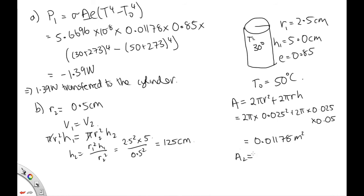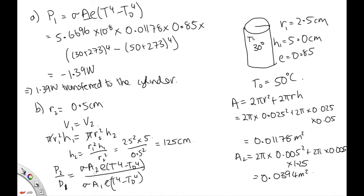OK, so a2, we can just substitute into this formula, 2 pi r2 squared. So 2 pi times 0.005 squared plus 2 pi times 0.005 times this new length, 1.25. Solving that on the calculator, we end up with the new surface area of 0.0394 meters squared. We're asked to find the ratio of energy transfers, so P2 over P1. So this is sigma a2e t to the 4 minus t0 to the 4 over sigma a1e t to the 4 minus t0 to the 4. Everything apart from the surface area is staying the same, so it will cancel out. So we've just got a2 over a1.